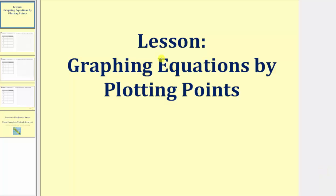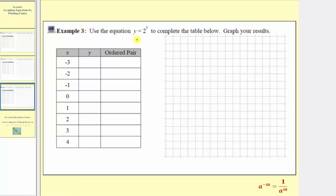Welcome to part three of the lesson on graphing equations by plotting points. In example three, we're asked to use the equation y equals two raised to the power of x to complete the table below and then graph the results. Looking at the table, notice how we're given the inputs or x values. So we need to perform substitution and find the corresponding outputs or y values, then write the ordered pairs, then plot the points on the Cartesian plane, and then sketch the graph for the equation y equals two raised to the power of x.